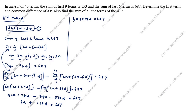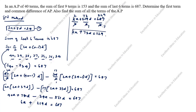Dividing 6a + 219d = 687 by 3 gives 2a + 73d = 229. This is the second equation — the same as in method 1. Both methods give the same equations, just derived differently.